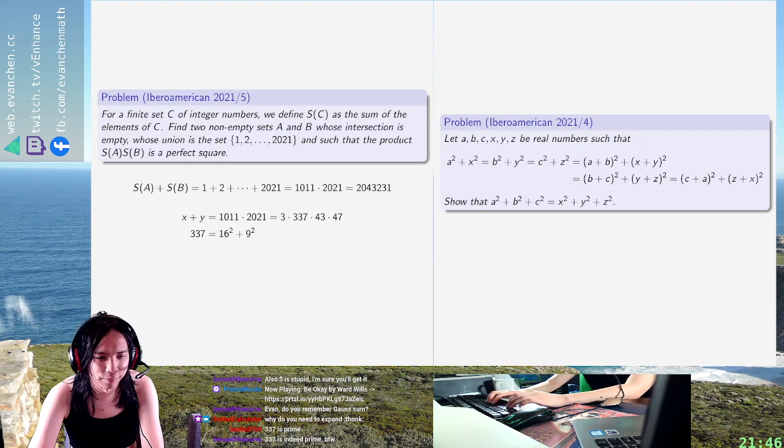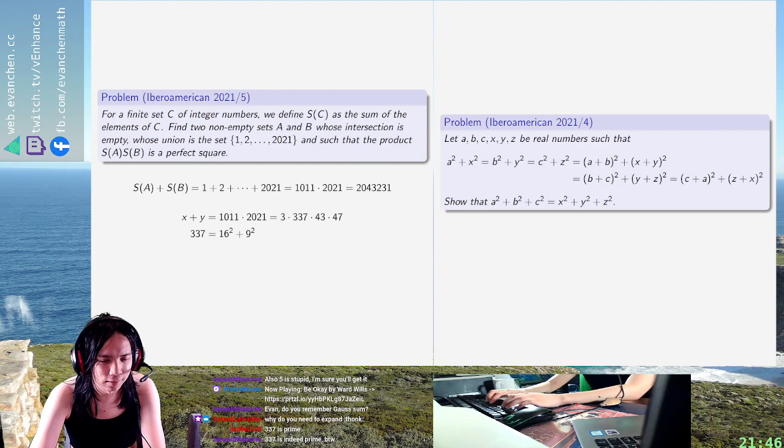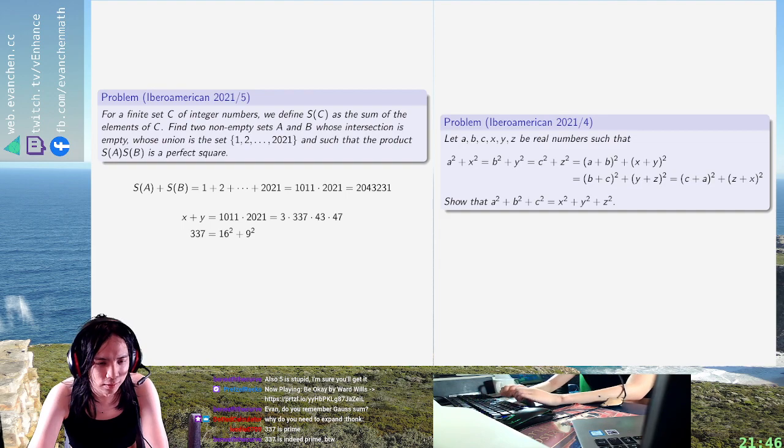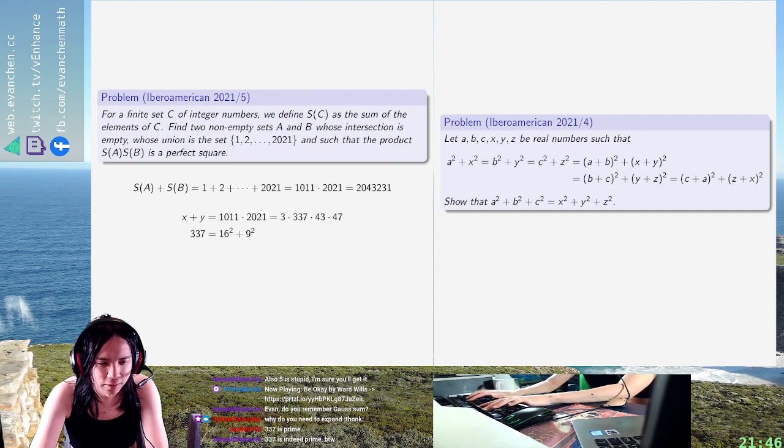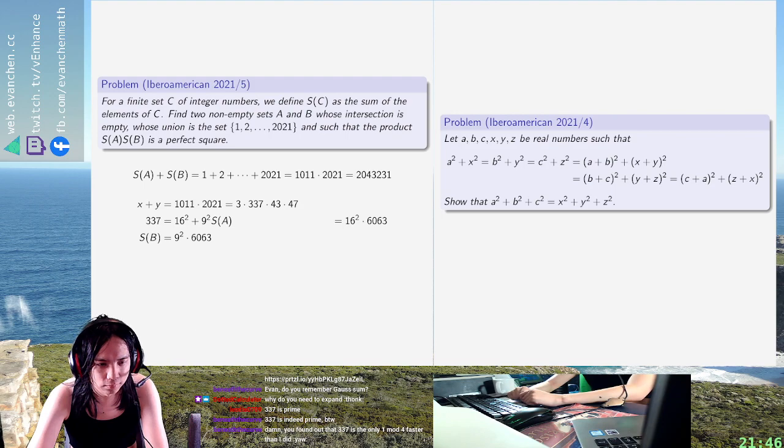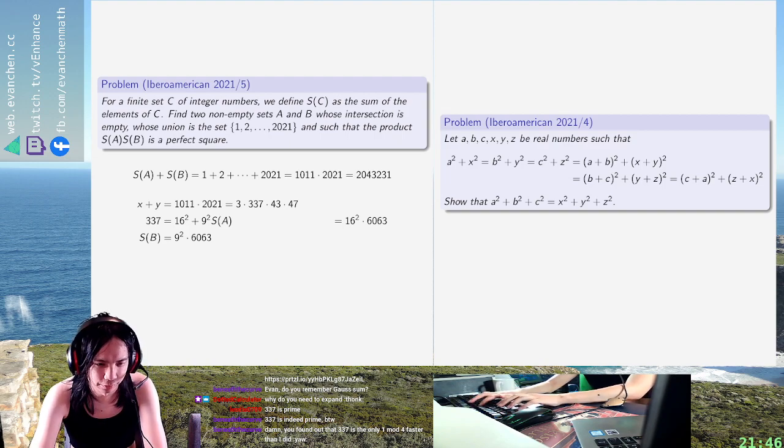Okay, so as long as S(A) is 16 squared times the other stuff, 6063, and S(B) is 9 squared times 6063, we'd be okay. I think this should just be fine, right? There's no way we can't achieve this.